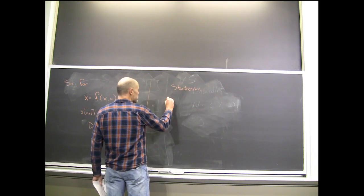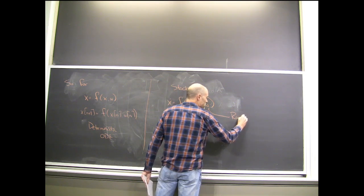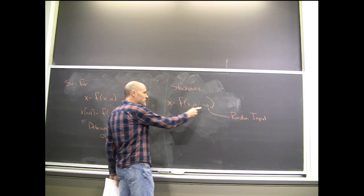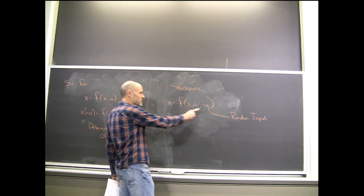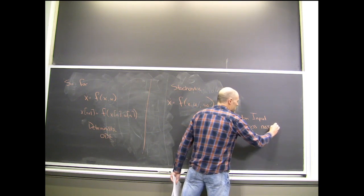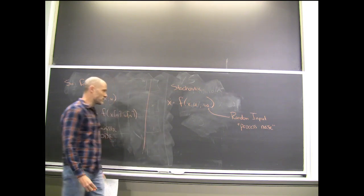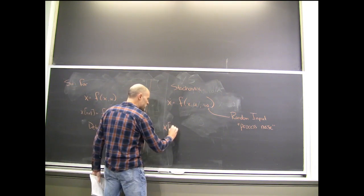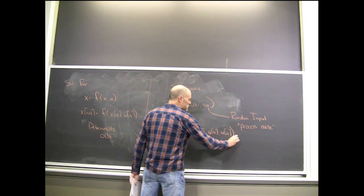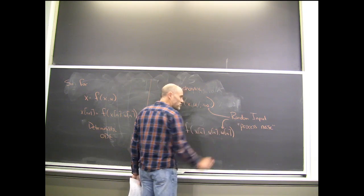We're going to start thinking about our systems having some exogenous random input. You can think of that as a disturbance. When randomness comes into the state equations, we think of that as process noise — that's one name for it. I distinguish that from measurement or observation noise, which would happen in the output equations but not the state equations. There's a discrete time equivalent of that as well. All of the work defining random processes is deferred to how we define this random input.